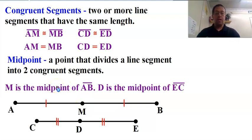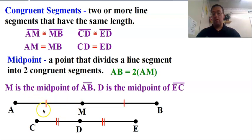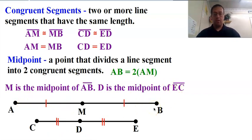M is the midpoint of segment AB. D is the midpoint of segment EC. And since these two lengths are the same, the length of AB is twice the length of either half — it's twice the length of AM. We could also say it's twice the length of MB. We could also flip this around and say that AM is half the length of AB. So let's do some stuff with that.